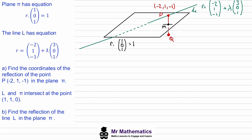We'll call the intersection between this line and the plane point M, where the line and the plane are perpendicular. Because this line is perpendicular to the plane, we know it will have the normal vector as its direction vector. We can see we've got a position on the line, so if we call this line L2, it will have the equation r equals the position vector plus a different parameter mu times this direction vector.